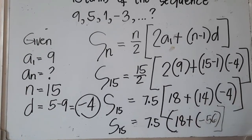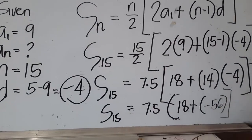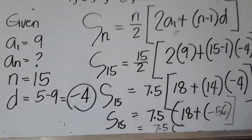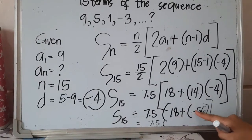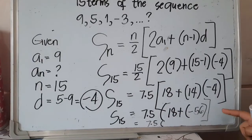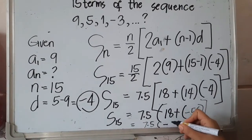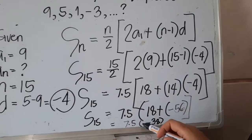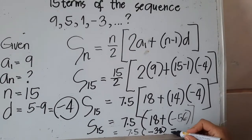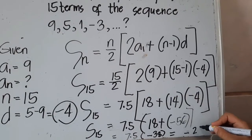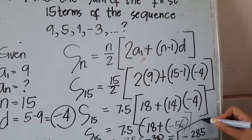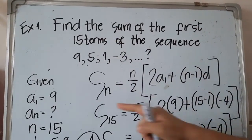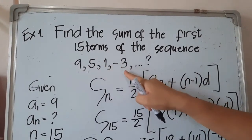We still need to simplify inside the parentheses before multiplying outside. So we have 7.5 times the quantity 18 plus negative 56. Applying addition, 18 plus negative 56 equals negative 38. So we have 7.5 times negative 38, which equals negative 285. Therefore, negative 285 is the sum of the first 15 terms of the sequence 9, 5, 1, negative 3, and so on.